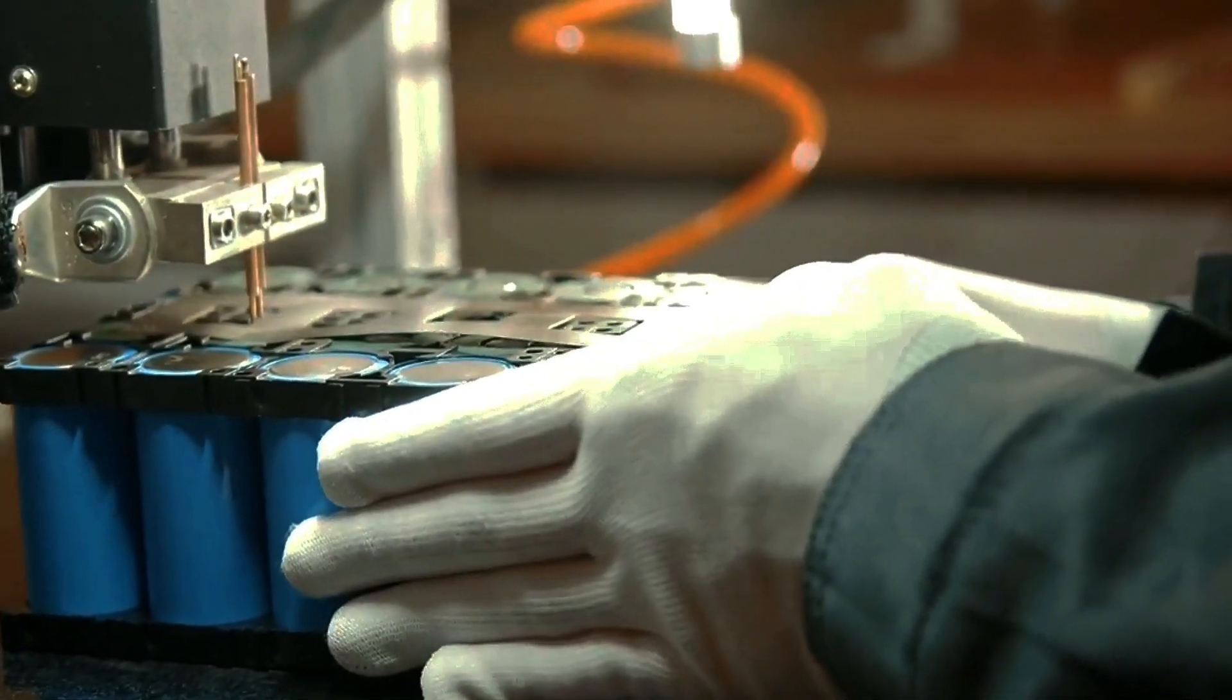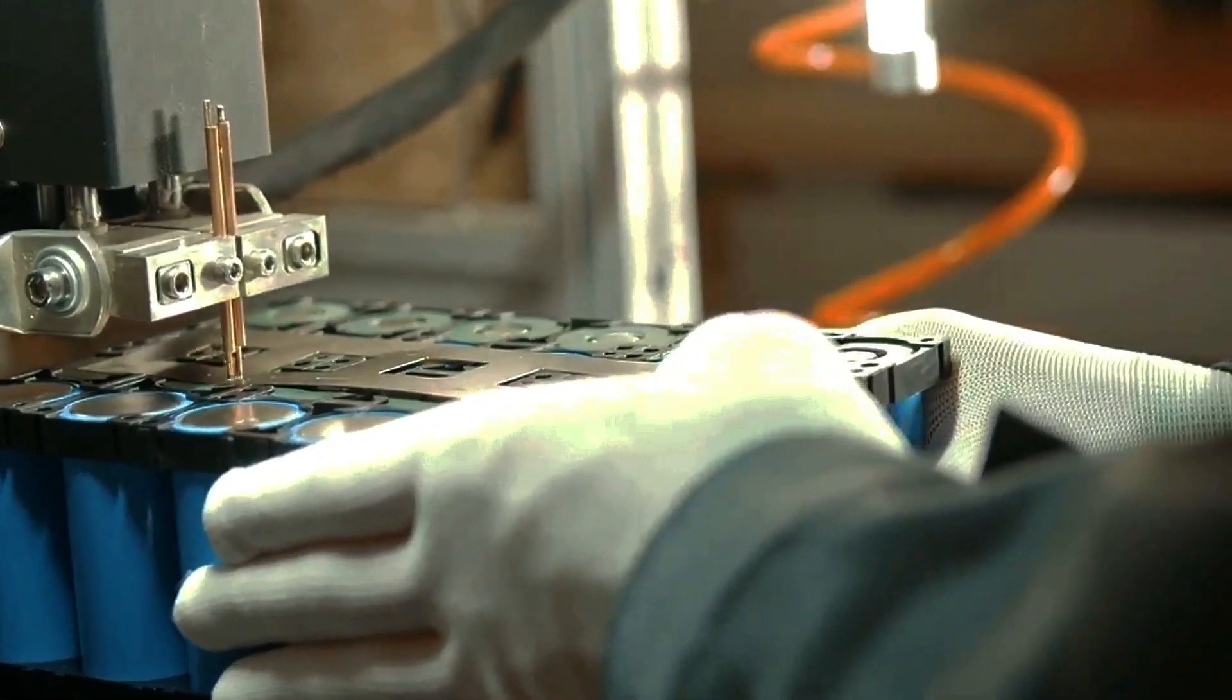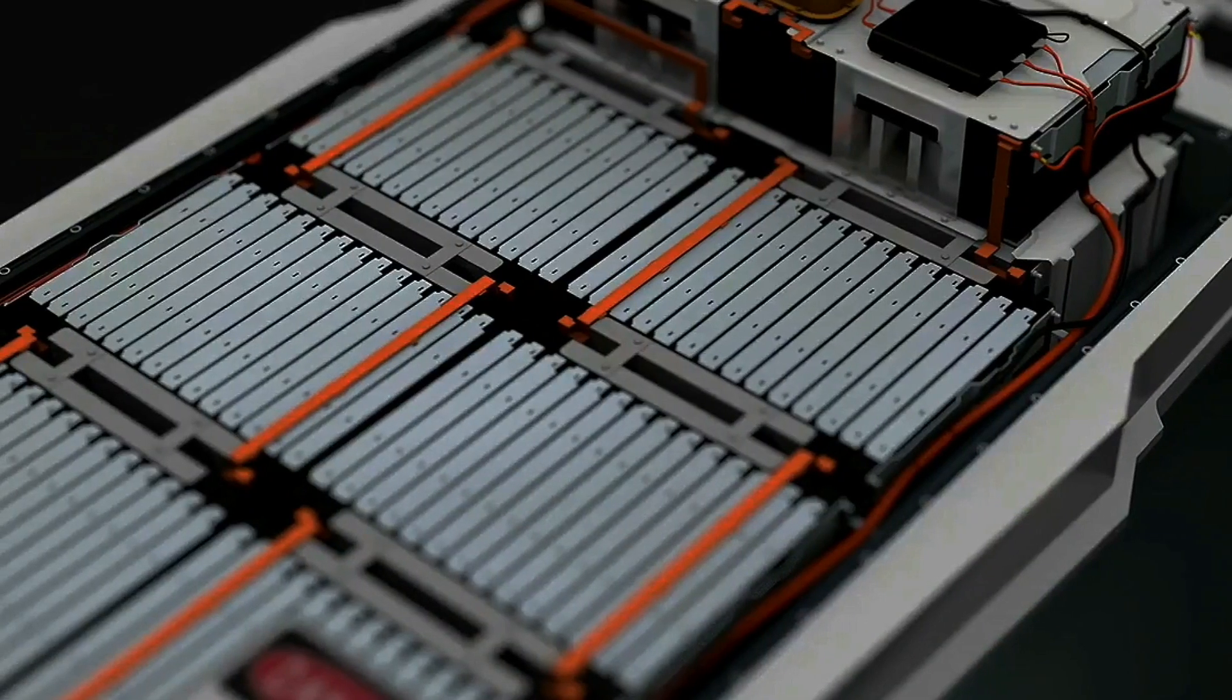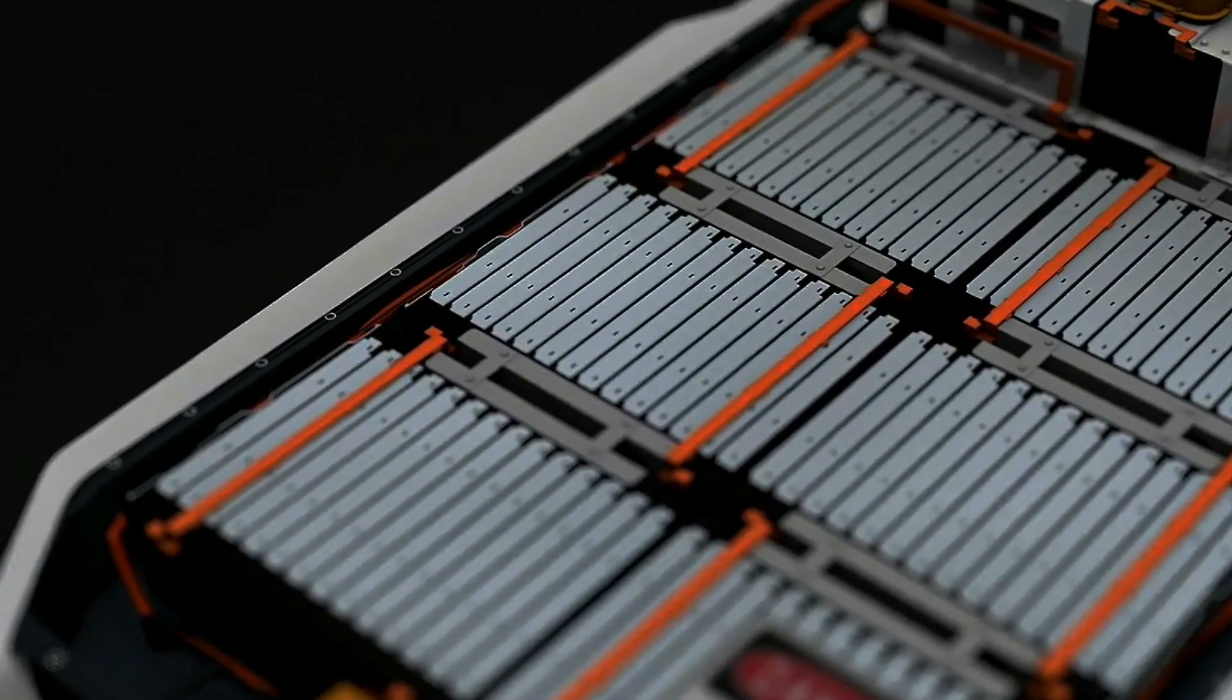Moreover, the longevity of a battery is paramount. Nanocoatings applied to electrodes can minimize the damage caused by repeated charging cycles, vastly extending the battery's life. Additionally, nanostructured fluids are being developed to curtail the formation of lithium dendrites, notorious for degrading battery performance over time.